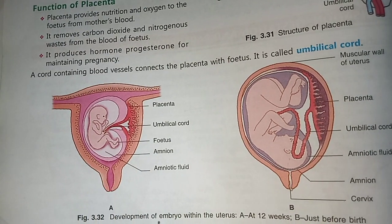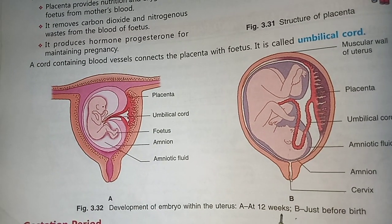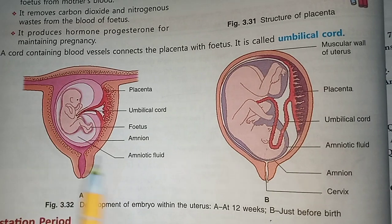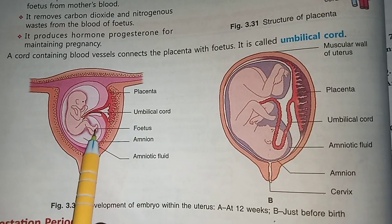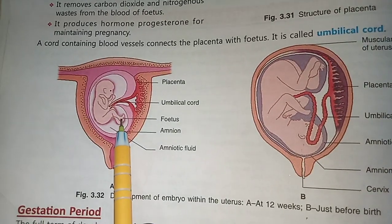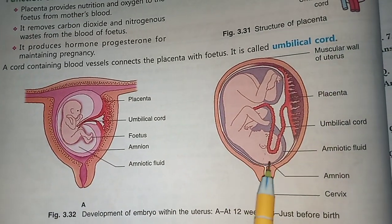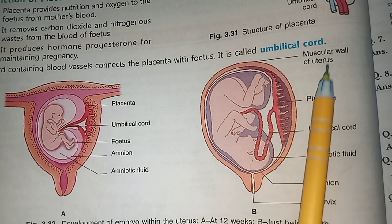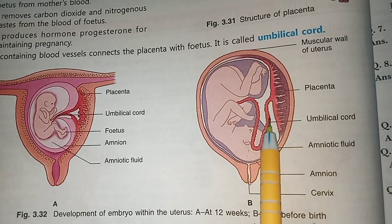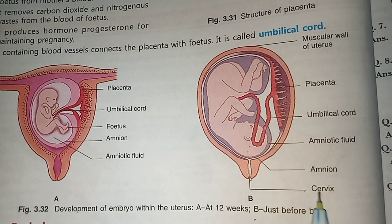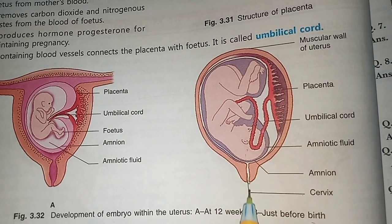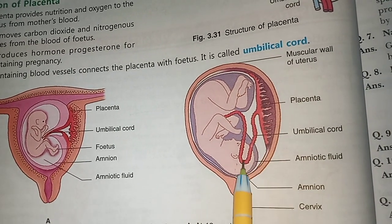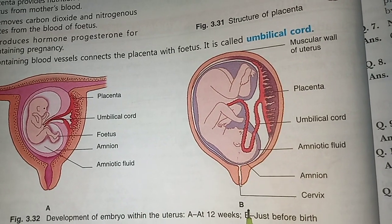اس figure میں پہلا figure ہے: development of embryo within the uterus at 12 weeks — 12 سبتہ یا 3 مہینے — جس میں placenta، umbilical cord، fetus، اور amniotic fluid develop کر کے۔ Gestation period 9 مہینے بعد just before birth: muscular wall of uterus، placenta، umbilical cord، amniotic fluid، amnion، cervix۔ یہاں سے baby کا birth ہوتا ہے — اس process کو parturition کہا جاتا ہے۔ Parturition میں umbilical cord اور placenta بھی باہر نکل جاتے ہیں۔